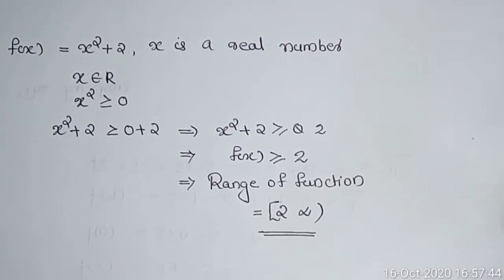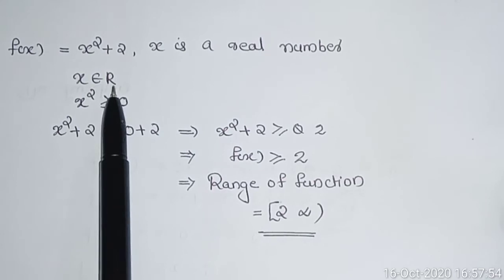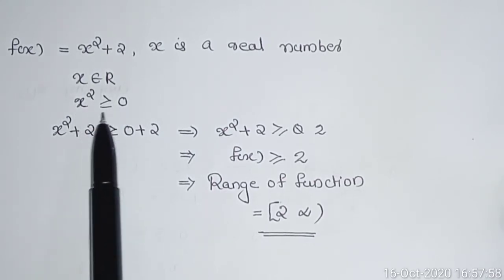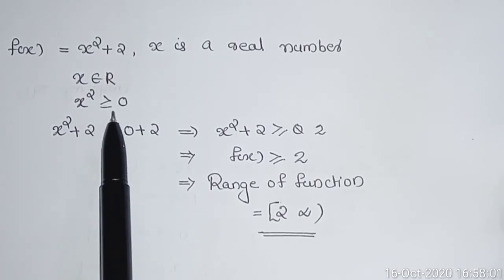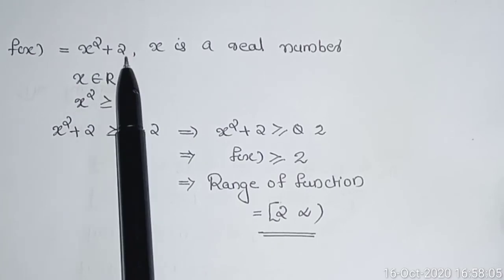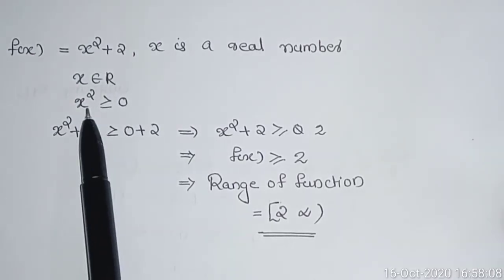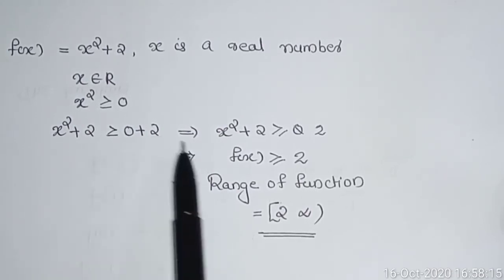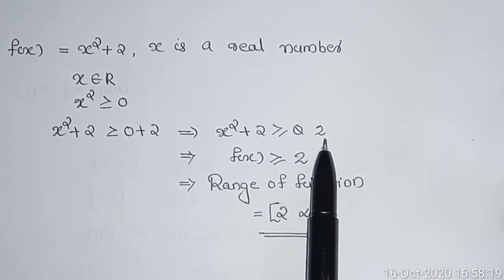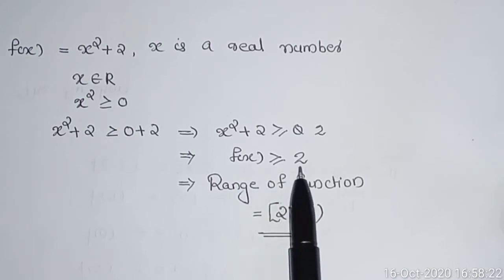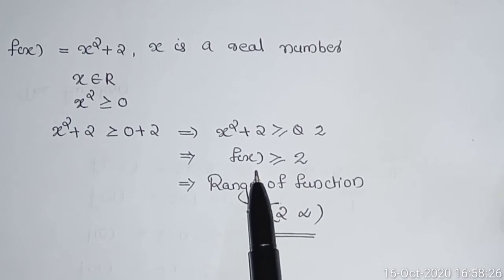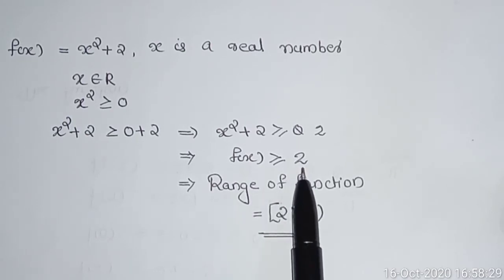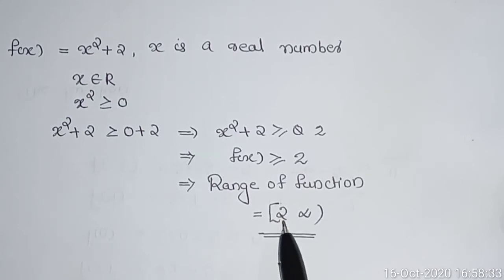Second: f(x) = x² + 2, where x is a real number. Since the square of any real number is ≥ 0, we have x² ≥ 0. Adding 2 to both sides: x² + 2 ≥ 2. So f(x) ≥ 2, meaning the range of the function is the interval [2, +∞).